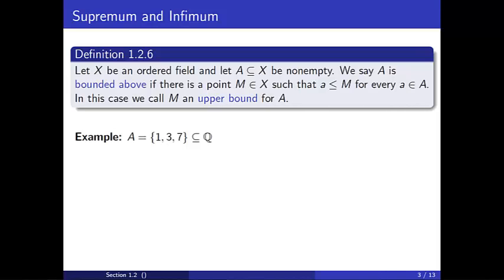Here, A consists of the numbers 1, 3, and 7. We will think of A as a subset of the rational numbers. For our candidates for the upper bound, we could certainly take 7 since 7 is an element of Q and is greater than or equal to every element in A. We could also take 8 or 92 or 33 halves since each of these is a rational number greater than or equal to every element of A.